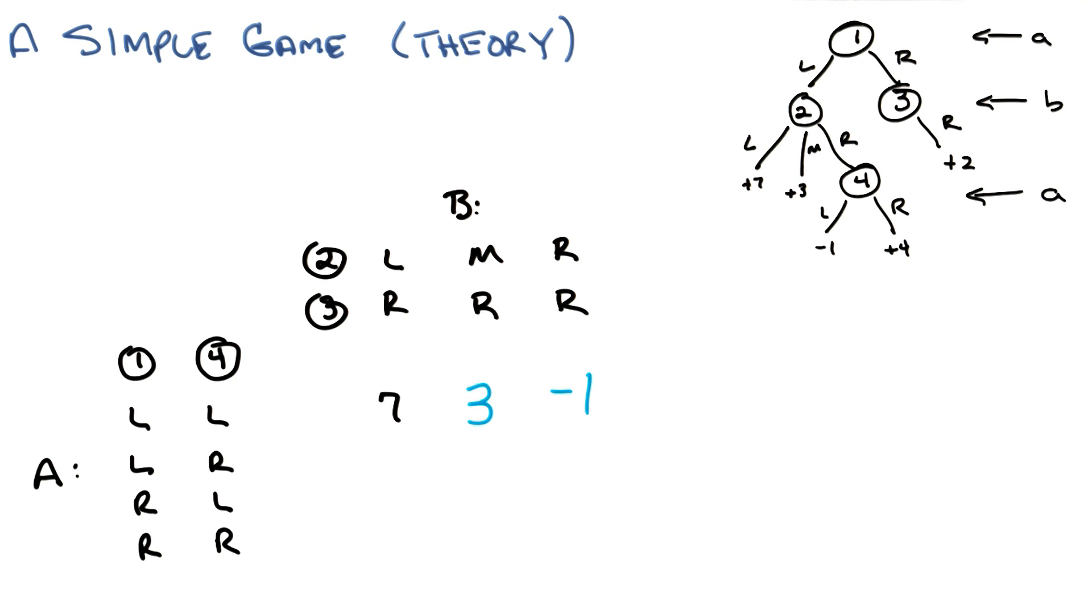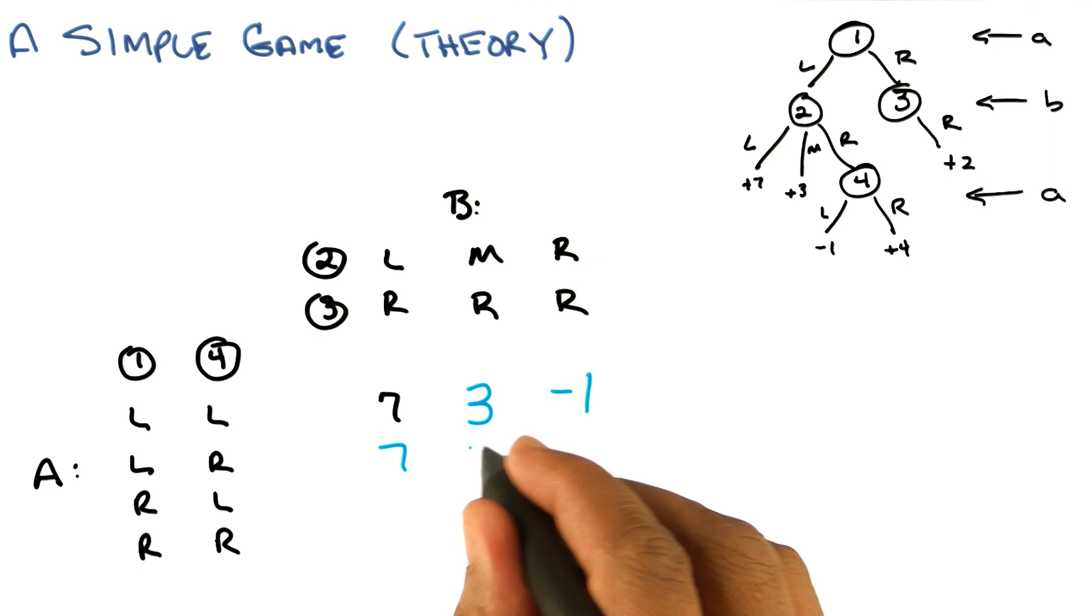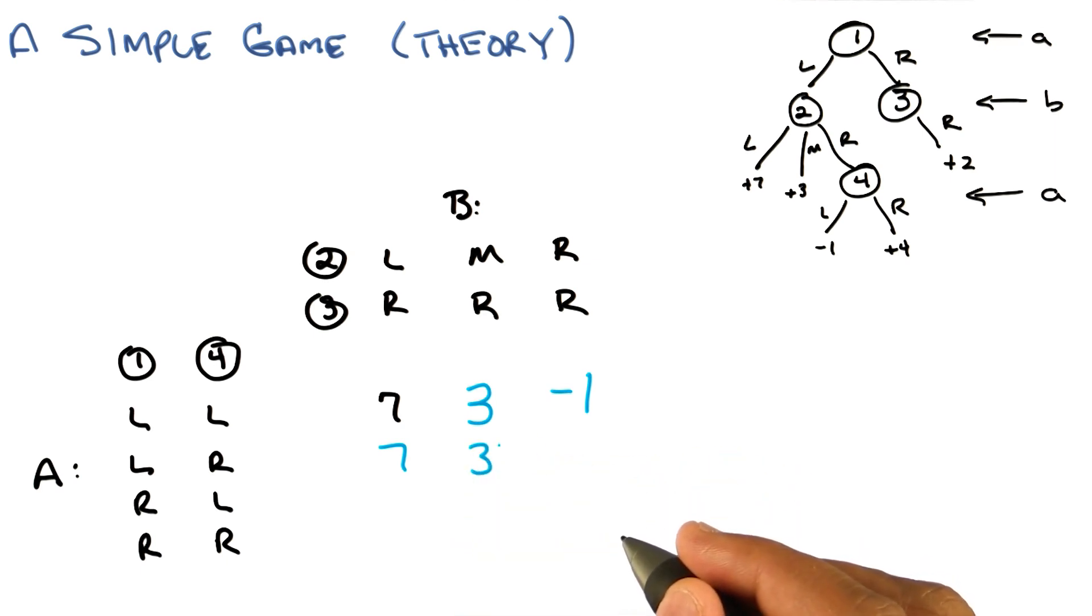The next row should be exactly the same as this one except for in that third case. So it should be seven, three, and the difference there, the R and four only matters in this case where we've gone to the right state, sorry, right action from state two, and so that should give us a plus four. So four. Correct so far. All right. Halfway there.